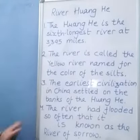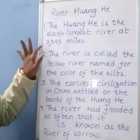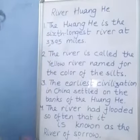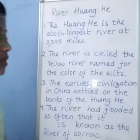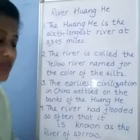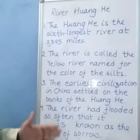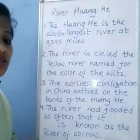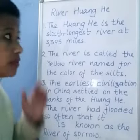River Huanghe. The Huanghe is the sixth longest river at 3,395 miles. The river is called the Yellow River because of the silt which it brings. The earliest civilization of China settled on the banks of the Huanghe — that's why this civilization was called the Huanghe civilization.